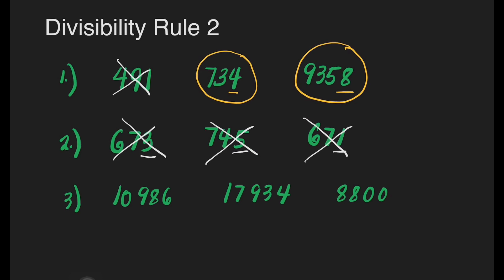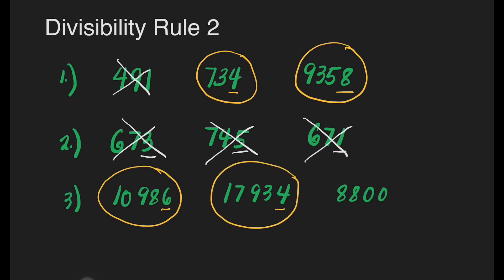Let us now check number 3. Which of these 3 numbers are divisible by 2? The first number's last digit is 6, so it is divisible by 2. The second number's last digit is 4, so it is also divisible by 2. The last number ends with 0, so this is also divisible by 2.